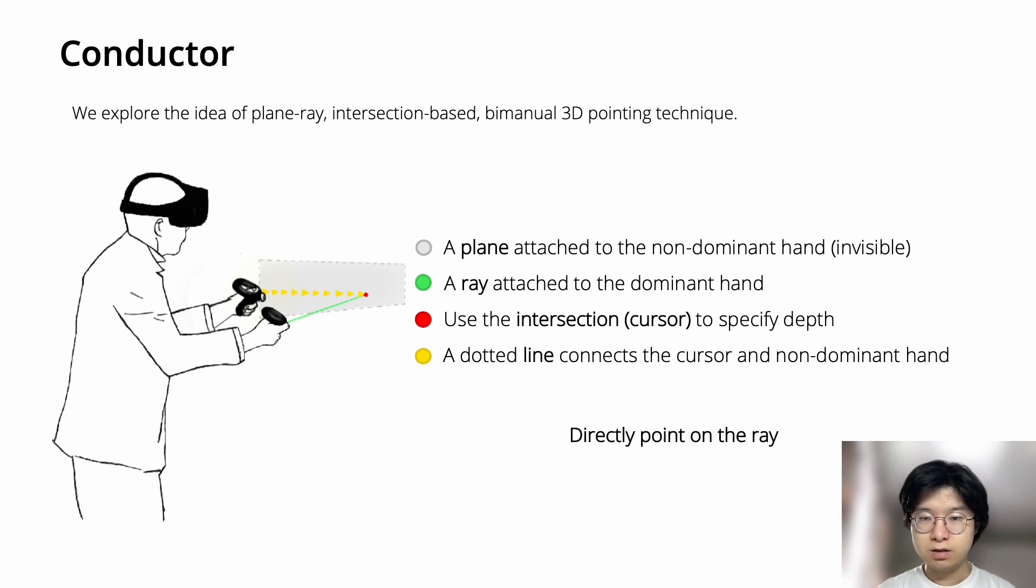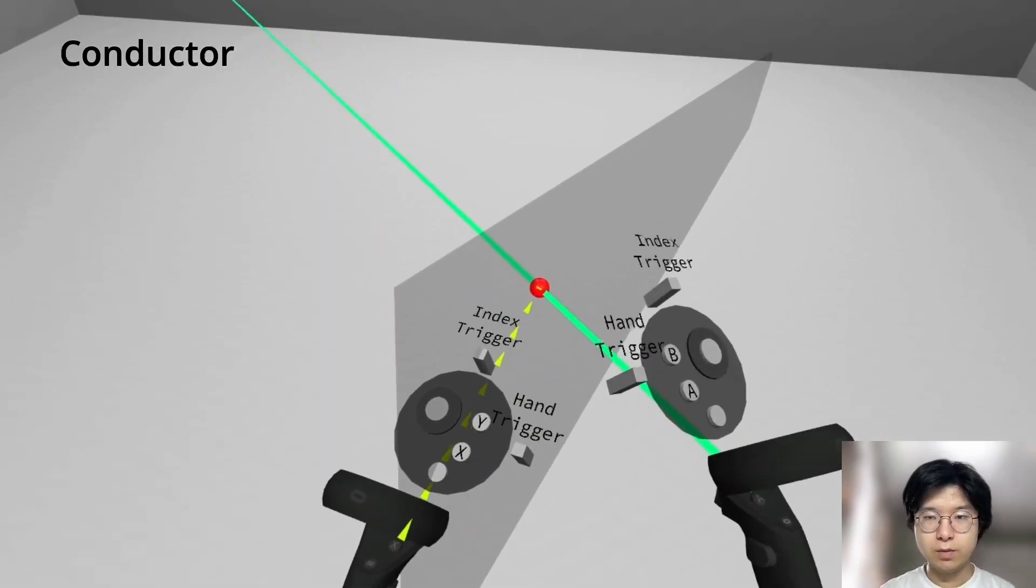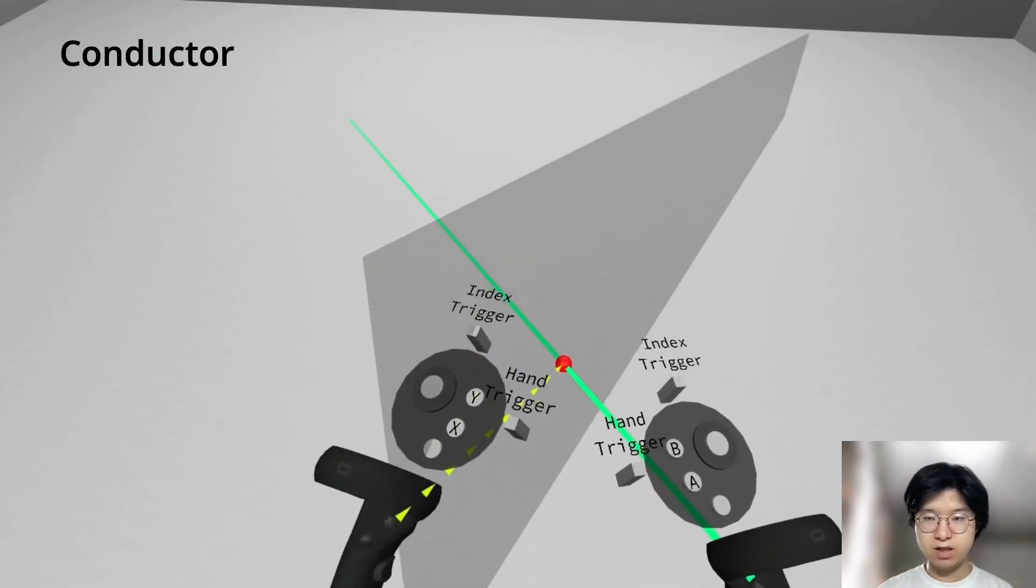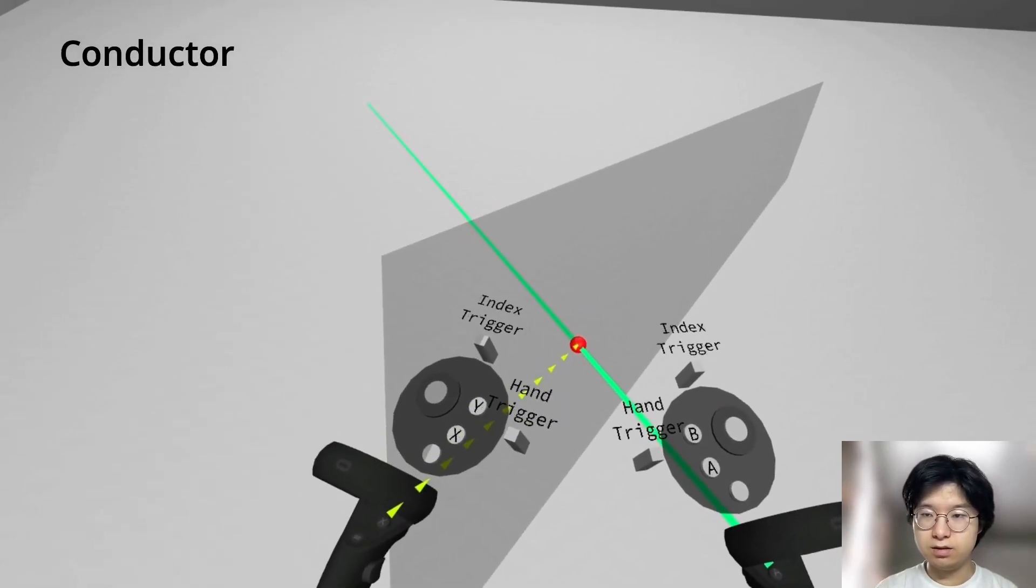This means Conductor provides a mechanism to directly point on the ray. Here is a more detailed video to explain this technique. We can see the ray from the dominant hand, the plane on the non-dominant hand, and the ray cursor at the intersection of the plane and ray.